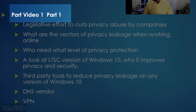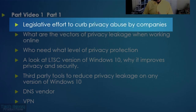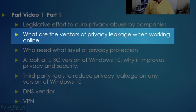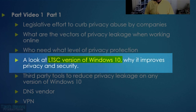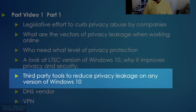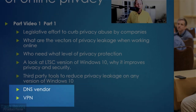In part one, the first video, we're going to look at legislative efforts to curb privacy abuse by companies and the vectors of privacy leakage when working online. We'll look at operating systems, browsers, and applications, and who needs what level of privacy protection. We're going to look at the LTSC version of Windows 10 and why it can be an option to improve privacy and security. We'll also look at third-party tools to reduce privacy leakage on any version of Windows 10, plus DNS vendors and VPNs.